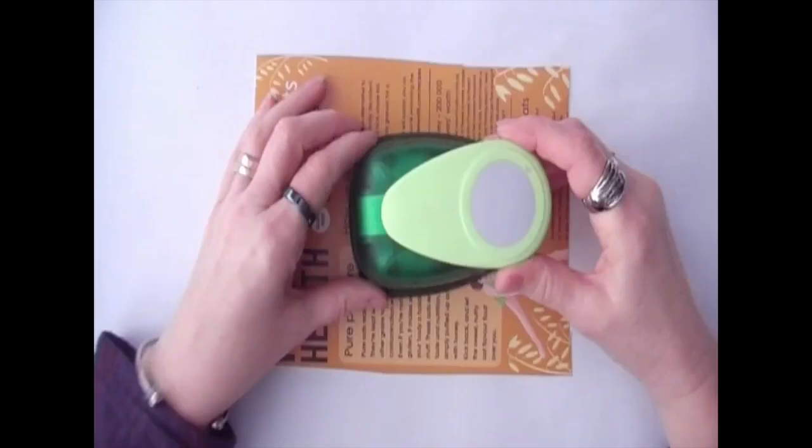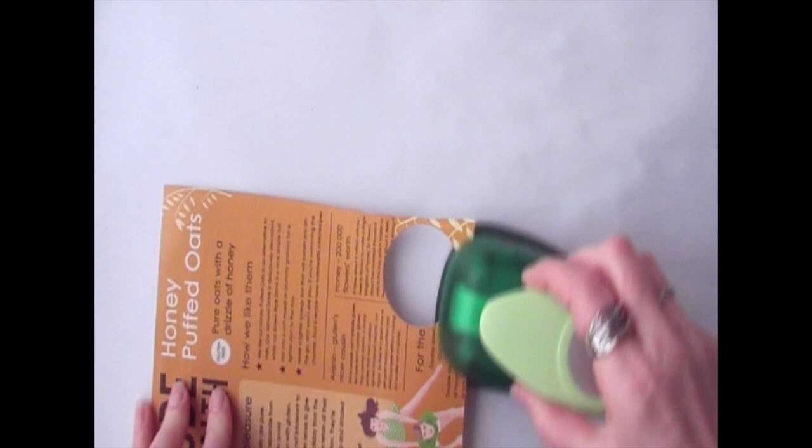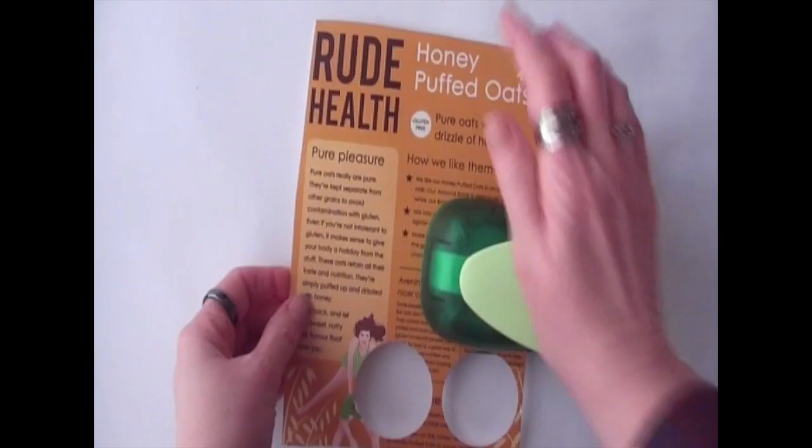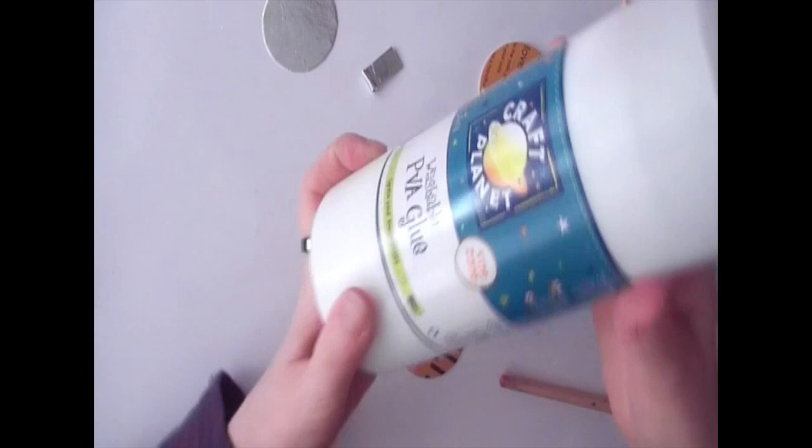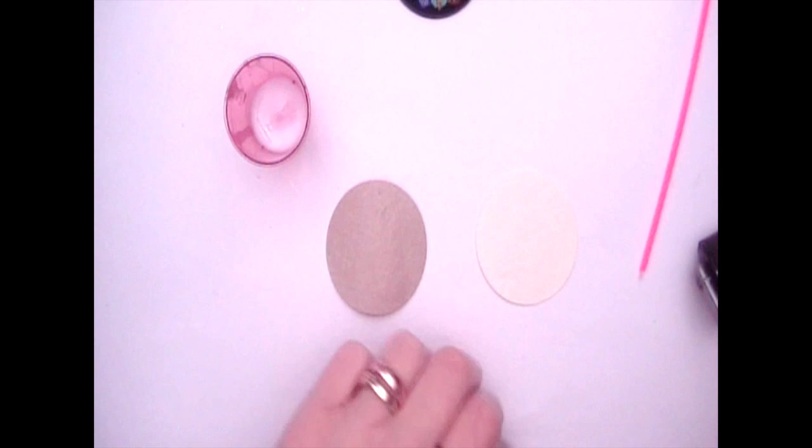So then you need to take a two inch circular punch and punch out three circles, and now you need to use some more PVA glue to glue these circles together to form your pendant base.